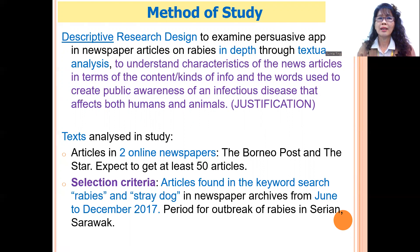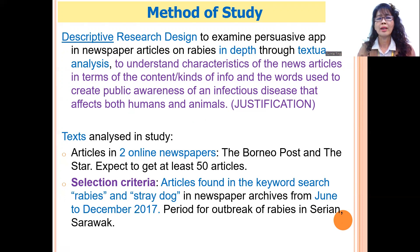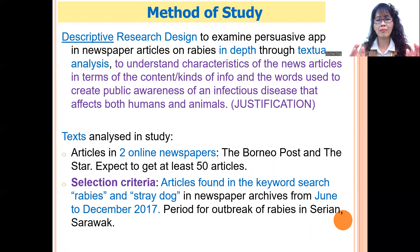For this study, I use a descriptive research design because I wanted to know the characteristics of the news articles on rabies — in terms of the kinds of information and the words used to create public awareness. The texts were from two online newspapers, the Borneo Post and The Star, and I expect to get at least 50 articles, selected from a six-month period, containing the keywords 'rabies' and 'stray dog.'